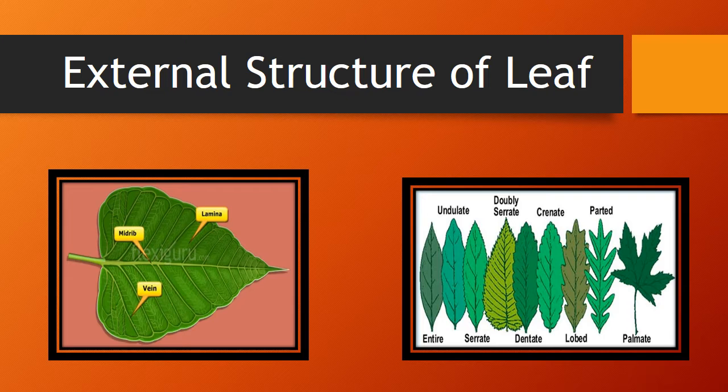The outer structure of a leaf consists of three parts: midrib, lamina, and veins. If you look at the structure of leaves, every leaf is different from the other — it has a different shape, different size, and different structure. This is how different leaves look externally.